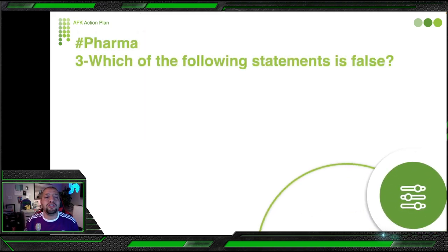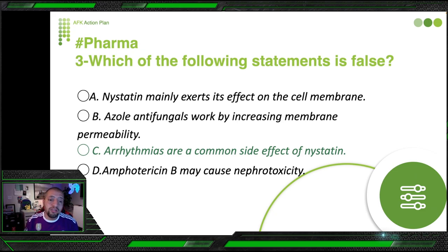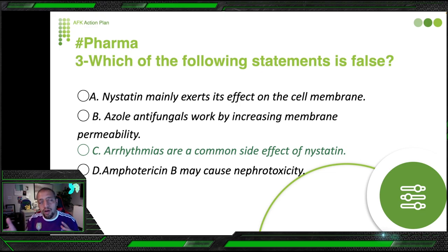Back to the question — which statement is false? Nystatin mainly exerts its effect on the cell membrane: yes, correct. Azole antifungals work by increasing membrane permeability: correct. Arrhythmia is a common side effect of nystatin: NO — we said it's bradycardia, not arrhythmia. Amphotericin B may cause nephrotoxicity: correct. So the false statement is that arrhythmia is a common side effect of nystatin.